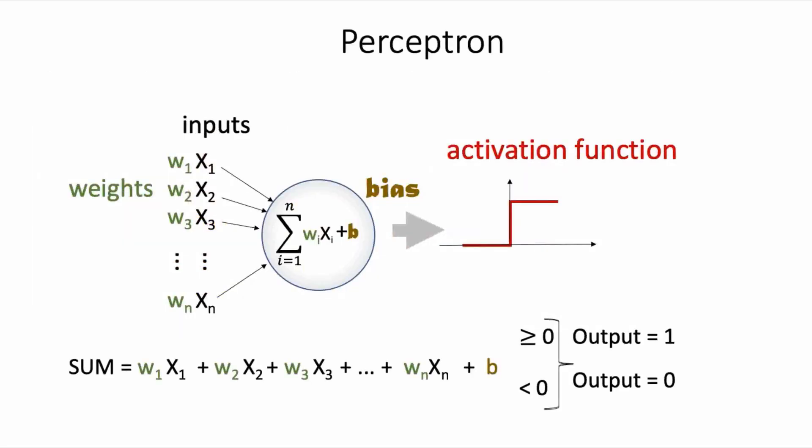We talked about the computations of neural networks, starting with the computations of a single neuron model. A single neuron's job is to find weights for all the dimensions in its inputs and also find a bias term. A neuron computes the weighted sum of its inputs, adds the bias, and passes this total sum through an activation function to produce an output. An activation function is a filter that squashes the sum in some way.